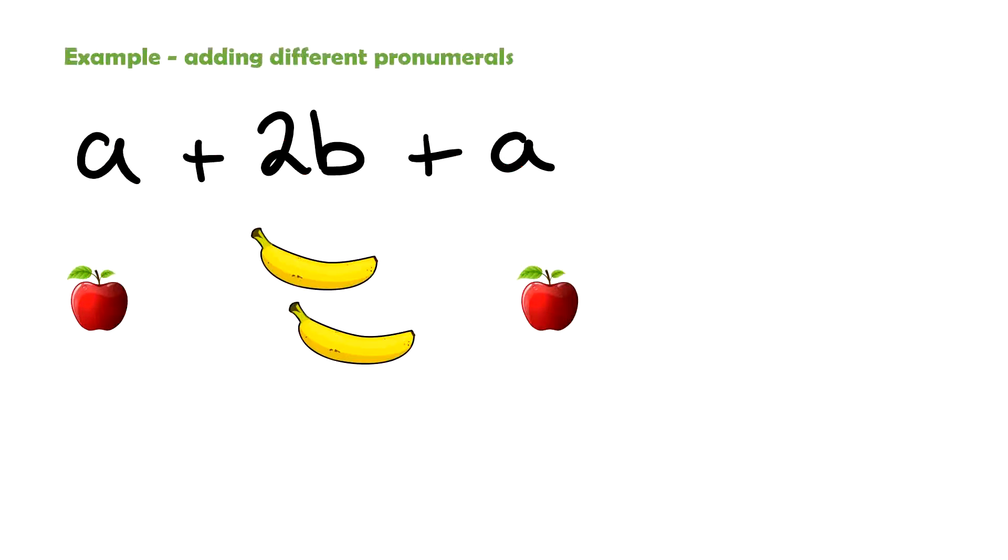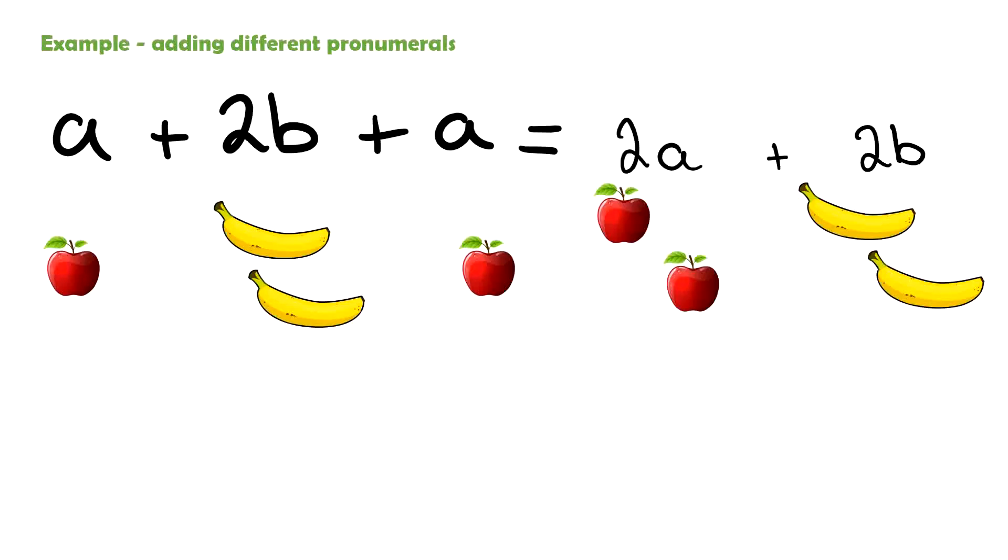We're now going to have a look at adding different pronumerals. And our example here is a plus 2b plus a. Now, remember, if they're the same fruit, we can add them. So if I have a plus 2b plus a, we have two apples and two bananas. So my expression can be written as 2a plus 2b, as you can see on the screen now.